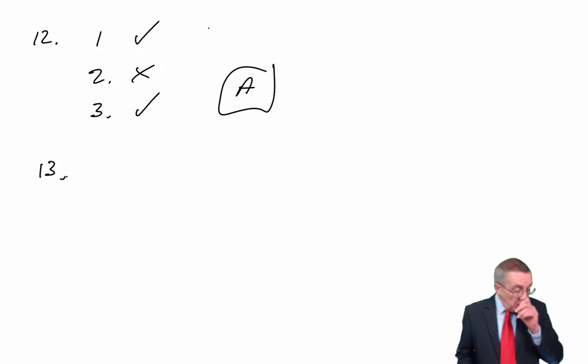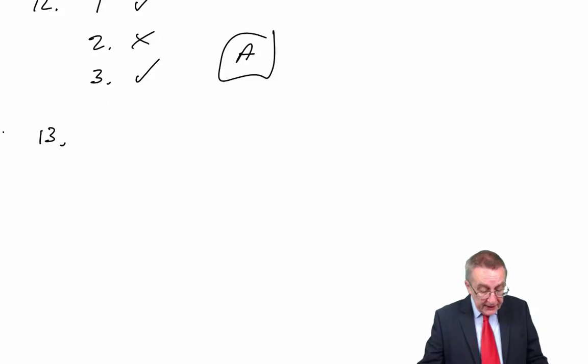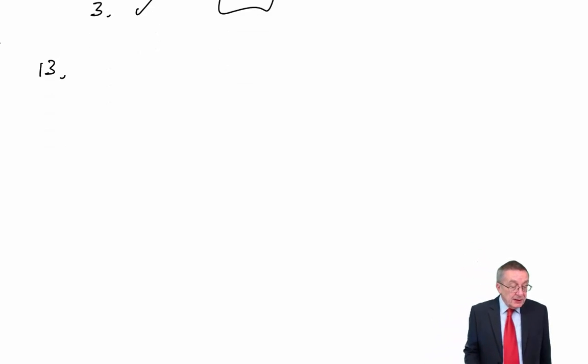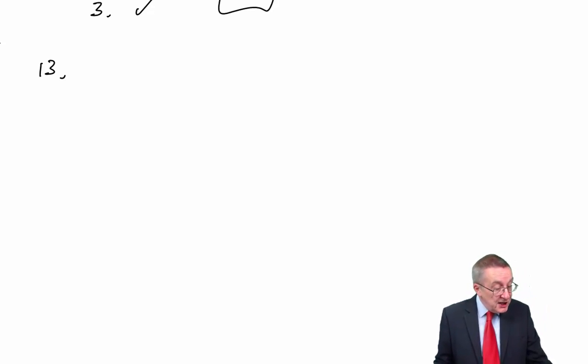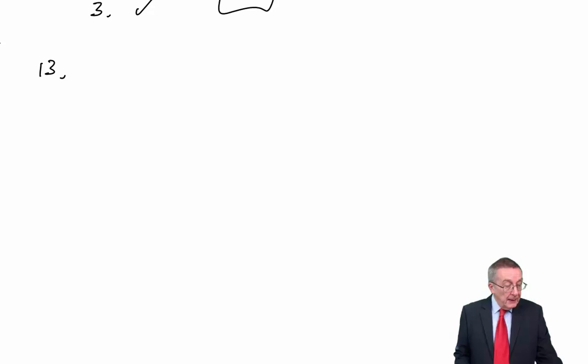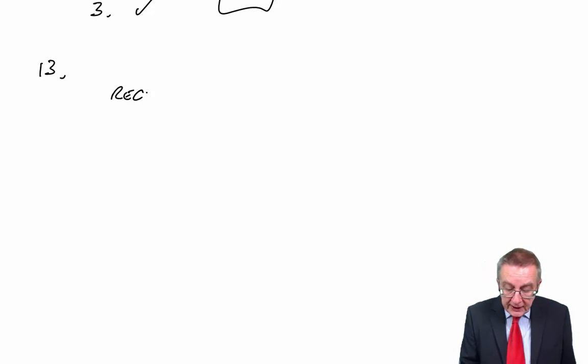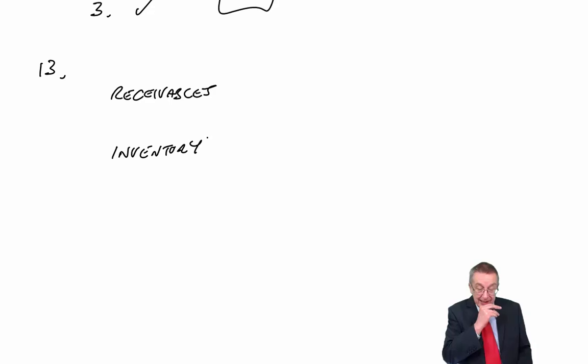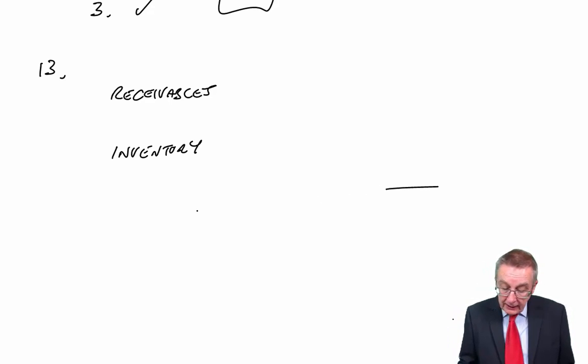Thirteen. Numbers one. Hopefully an easy enough one. What is the net investment in working capital required for the next year? So the net investment, working capital, we need to invest money in receivables, we need to invest money in inventory. So to show the total we're investing, the net investment, we need to subtract our payables.